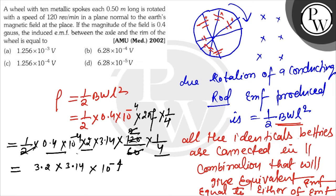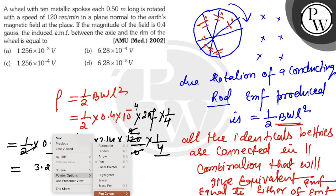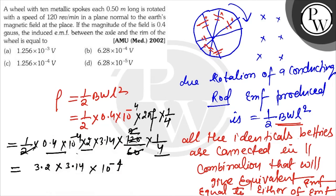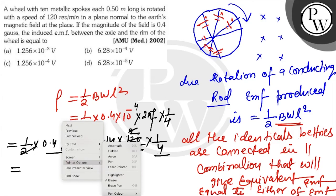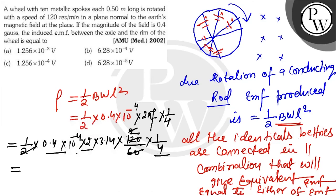Two cancels, 4 in the denominator. With this 2, 0.2 remains, so this becomes 0.628.